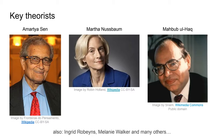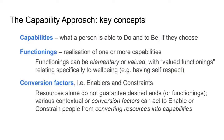Mahbub al-Haq was very influential in the development of the UN's human development indicators and the whole concept of human development, which is at the core of the United Nations' work on welfare. That's why many of you may have come across the capability approach without necessarily knowing it. Others who have been influential include Ingrid Robeyns, who wrote a fantastic CC open book on it in 2017, and Melanie Walker, the main person applying it in higher education.